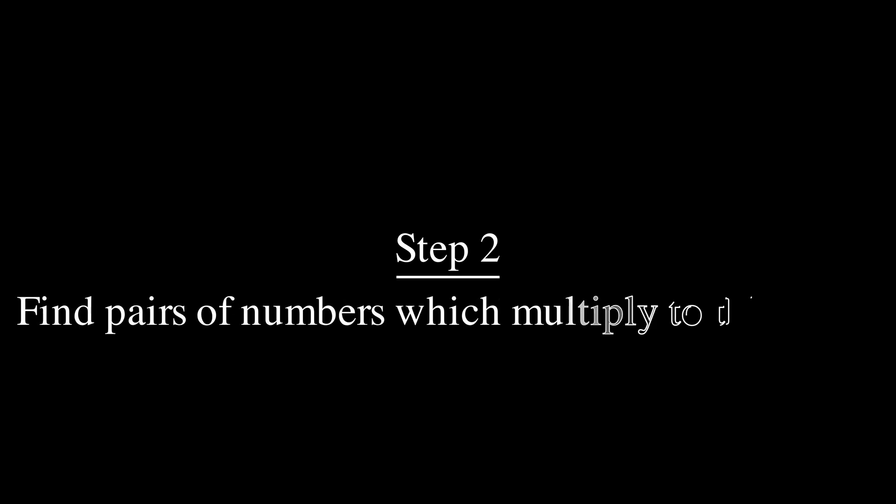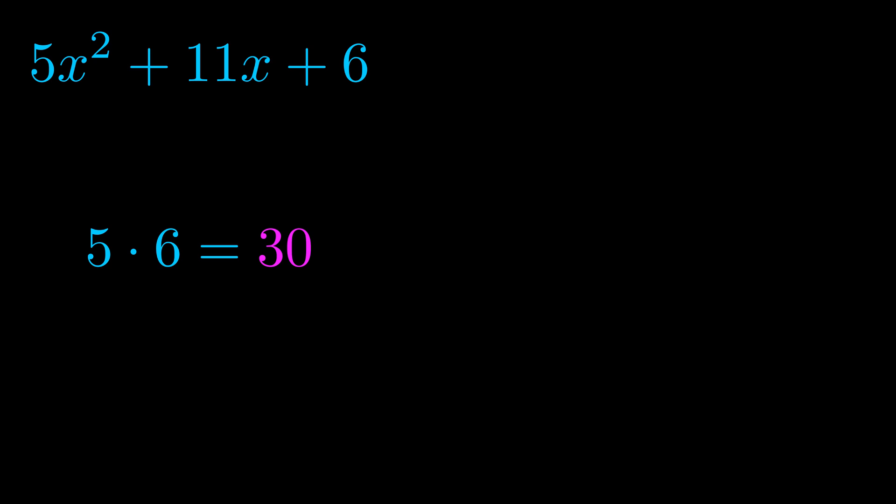Step two is to try to find all of the pairs which multiply to this number. Now it turns out you don't really need to find all of them, but go ahead and write down as many numbers as you can that multiply to the magenta value for now. Pause the video and resume when you're ready to continue.